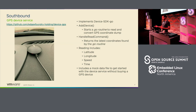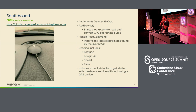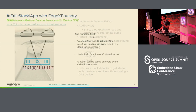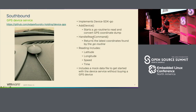As soon as the device service is started, there's a callback called Add Device. What we do in this callback is start a Go routine — I implemented this in Go — that would just read all those lines. As soon as I see a line I'm interested in, I pull it, convert all the data, and save it in a global struct. And then once I send a read command, the device service gets that global struct and sends that data to core data.